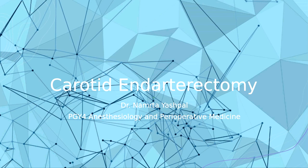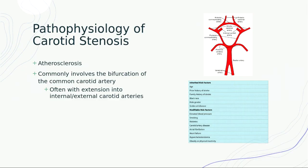We'll start with the pathophysiology — a brief review of why we bother doing carotid endarterectomies. Essentially it comes down to atherosclerosis, which is the main pathophysiology of carotid stenosis. It often involves the bifurcation of the common carotid artery with extension into the internal or external carotid arteries, though I've mostly seen the internal carotid arteries being operated on.